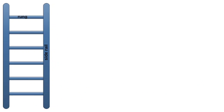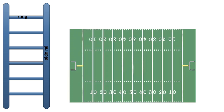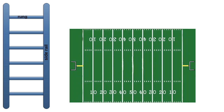I would love for you to think of some parallel lines around you. There are parallel lines on a ladder — the rungs are parallel and the side rails are parallel. What about on a sports field? The lines on a sports field are parallel.